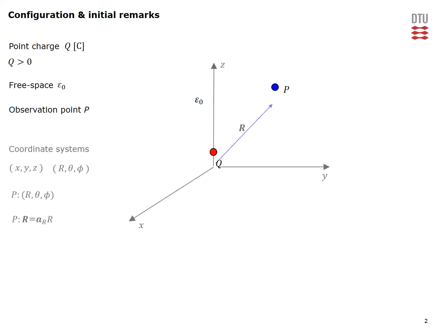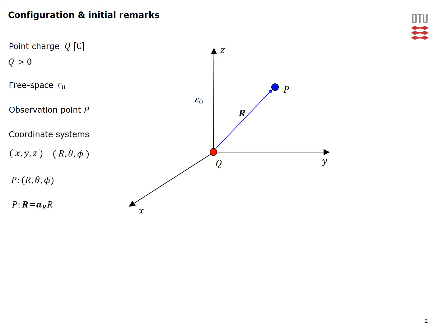First of all, we introduce two coordinate systems: rectangular x, y, z and spherical r, θ, φ coordinate systems. As you can see, the point charge is located at the origin of these systems, and the position of our observation point is given by these spherical coordinates or alternatively with this position vector here.